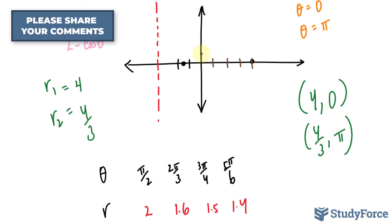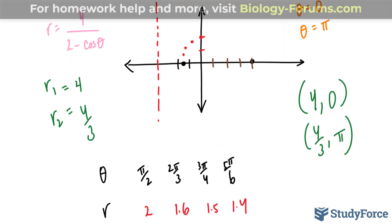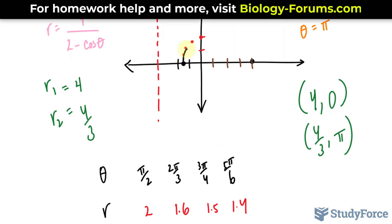At pi over 2, it shoots up 2 units, so we'll have a point here. At 2 pi over 3, which is equivalent to 120 degrees, that's around here, we have 1.6. At 3 pi over 4, 135 degrees, and finally at 5 pi over 6, we have 1.4. If I connect these, I should end up with an ellipse.